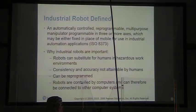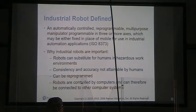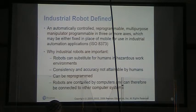Why are robots important? First of all, robots can be substituted for humans in hazardous work environments. Very often we have robots programmed to do welding tasks that are repetitive. That's one of the things robots do best — repetitive work. We can get consistency and accuracy not attainable by humans, reprogram robots for new tasks, and connect them to other computer systems.